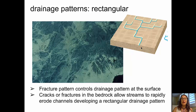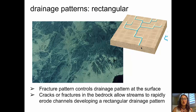Rectangular drainage forms in an area where fracture patterns control the drainage at the surface. These cracks or fractures in the bedrock allow streams to erode channels into those particular areas because they are already weakened by the fracturing. That is what develops a rectangular drainage pattern like the one seen here.